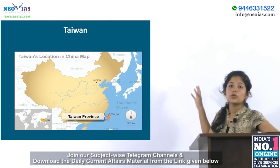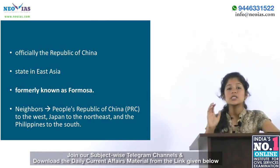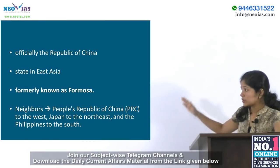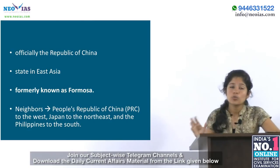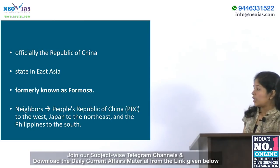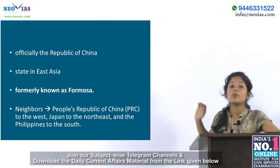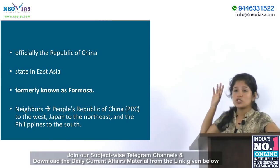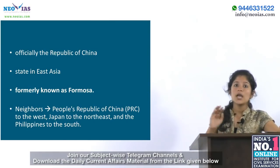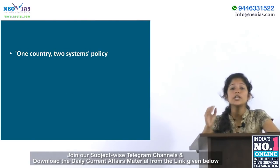China wants reunification with Taiwan. Taiwan is officially known as the Republic of China and is a state in East Asia. Taiwan was formerly known as Formosa. The major neighbors of Taiwan include China (People's Republic of China) to the west, Japan to the north-east, and Philippines to the south. China has also proposed adopting the one country, two systems policy.